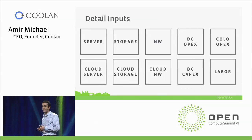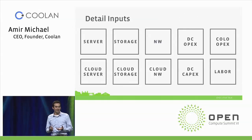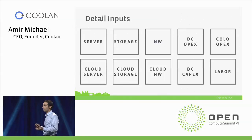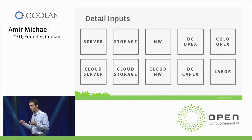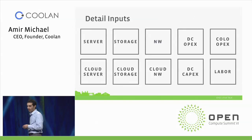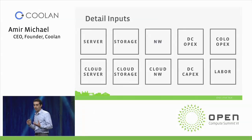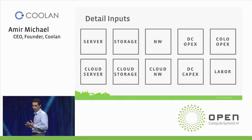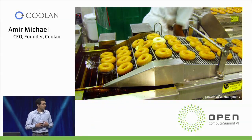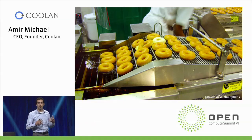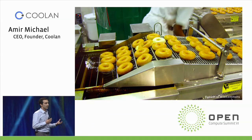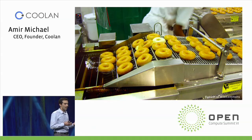And how about the labor? You need people to do all these things — how many technicians do I need, how many sys-admins? Lots of things go into this TCO model, and you get something on the output. You put it into this factory — this particular one happens to produce donuts, we produce bits. So we looked at a couple of different ways of thinking about the output.